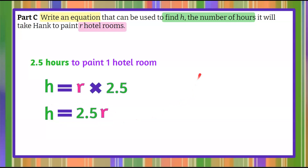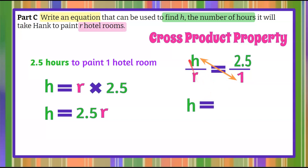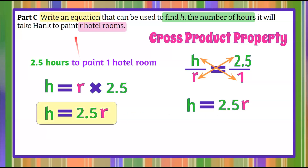I want to show another way using the cross product property. Writing our proportion with h over r equal to two and a half over one, the cross product property states that h times one equals two and a half times r. Since h times one is just h, we get h equals 2.5r — the same equation, confirming we are correct.